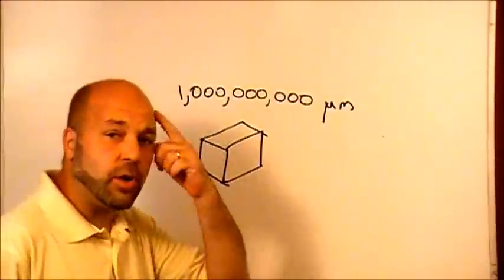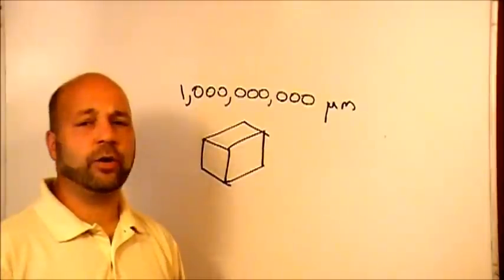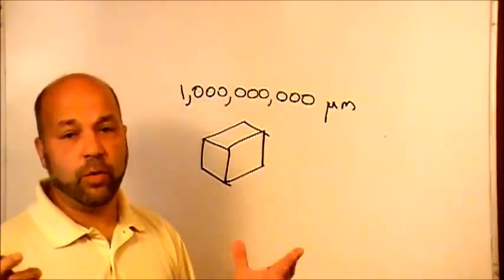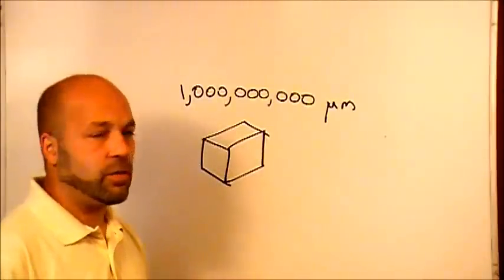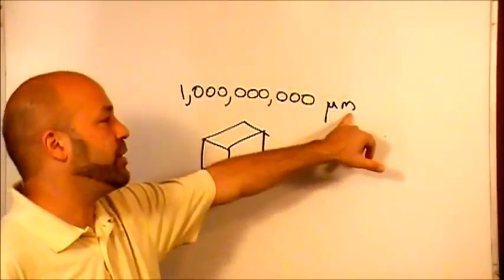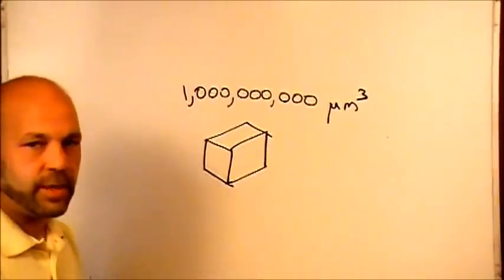So we've got 1 billion microns, and the symbol for micron is μm. By the way, we use the term micron—it's not officially correct. The correct term is micrometer, but everybody I know uses microns, so I'm going to use micron in this discussion. That's why the symbol for it is micrometer, and cubed.